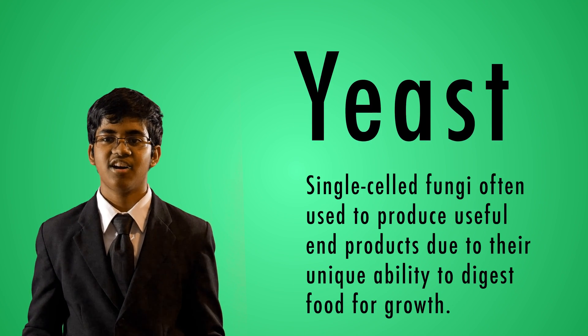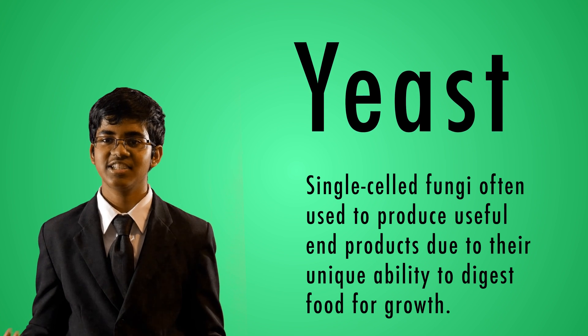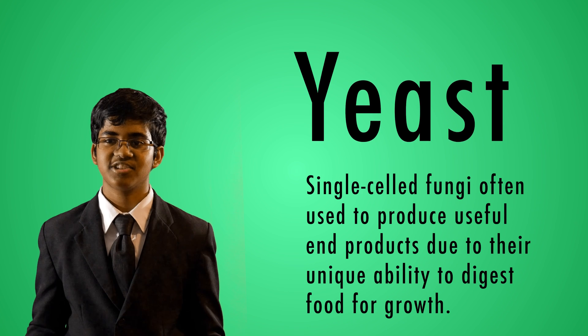You must be wondering what just happened. Why did the fire grow when the food and splint was put over the baby food jar? And why were there brown bubbles when the yeast reacted with the hydrogen peroxide? Let's back up to the basics first. Yeast are single-cell fungi often used to produce useful end products due to their unique ability to digest food for growth, especially sugars. Yeast is most commonly used to alcoholically ferment food such as bread by producing carbon dioxide and alcohol. However, yeast can also act as a catalyst to speed up the decomposition of substances like hydrogen peroxide, as seen in this lab.